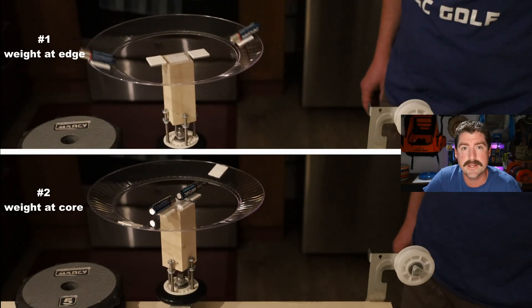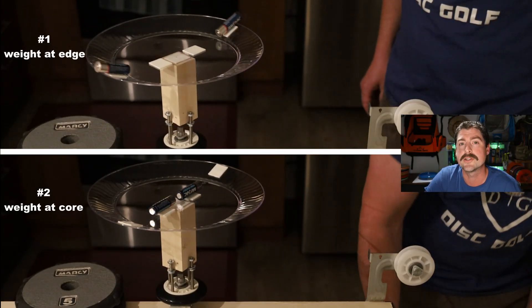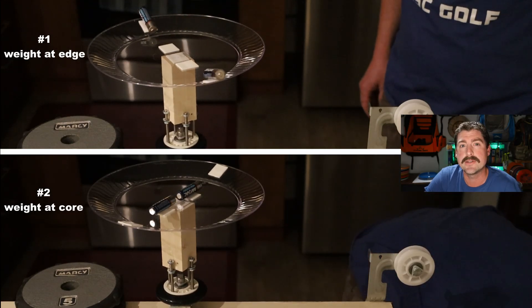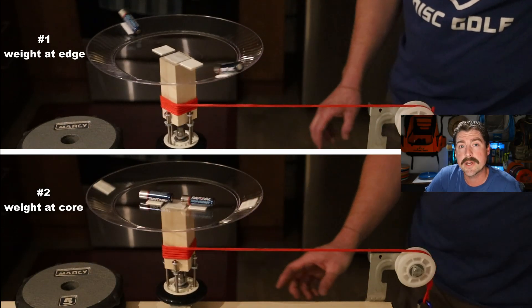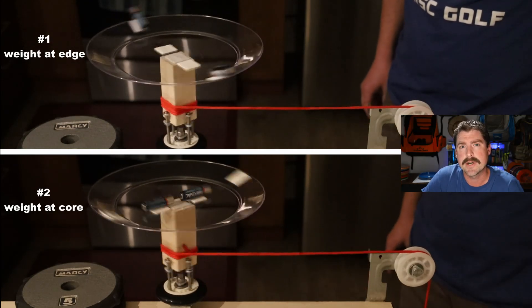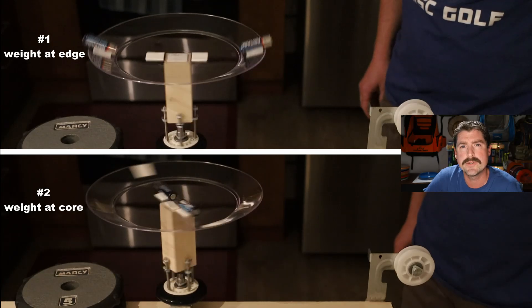The science totally backs that up, and I've got a little demonstration here to show you how that works. On top, I've got a spinning setup, a disc with weight near the outside. And then on bottom, I've got a rig with weight closer to the core, representing more even weight distribution.